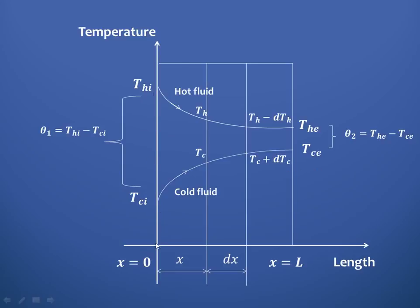At x = 0, the temperature difference is T_hi minus T_ci, which is known as θ₁. At the end of the heat exchanger, the temperature difference θ₂ is equal to T_he minus T_ce. These two boundary conditions — θ₁ at x = 0 and θ₂ at x = L — will be used for deriving the expression for Log Mean Temperature Difference.